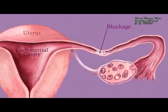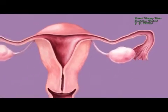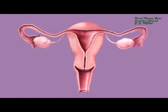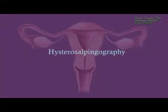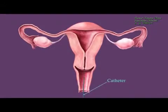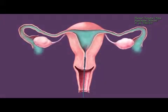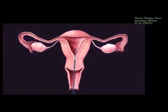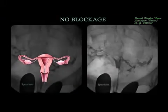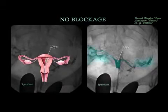A non-surgical outpatient procedure called hysterosalpingography can be used to check for a blockage in the fallopian tubes. A catheter is placed through the vagina and into the endometrial cavity. Next, a dye visible under x-ray is injected into the endometrial cavity.